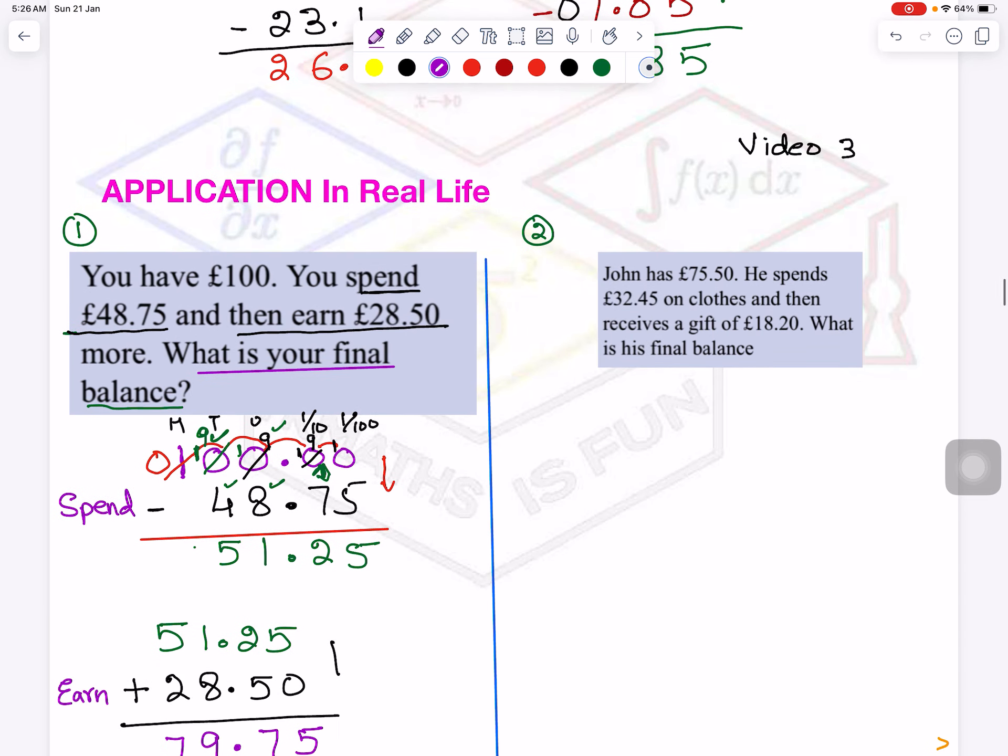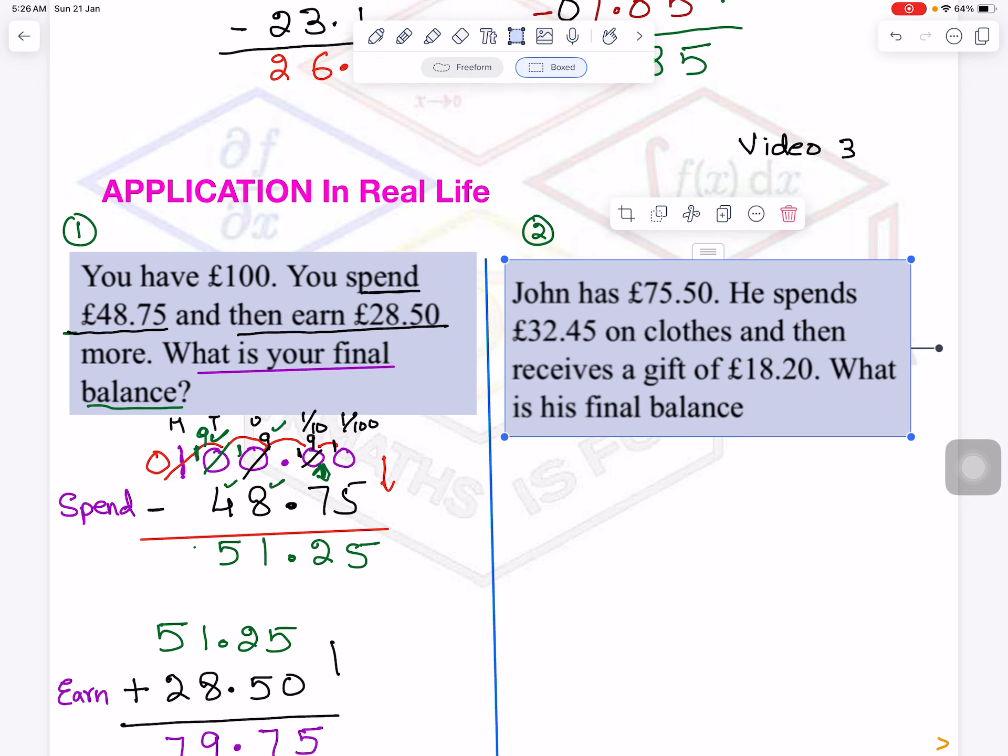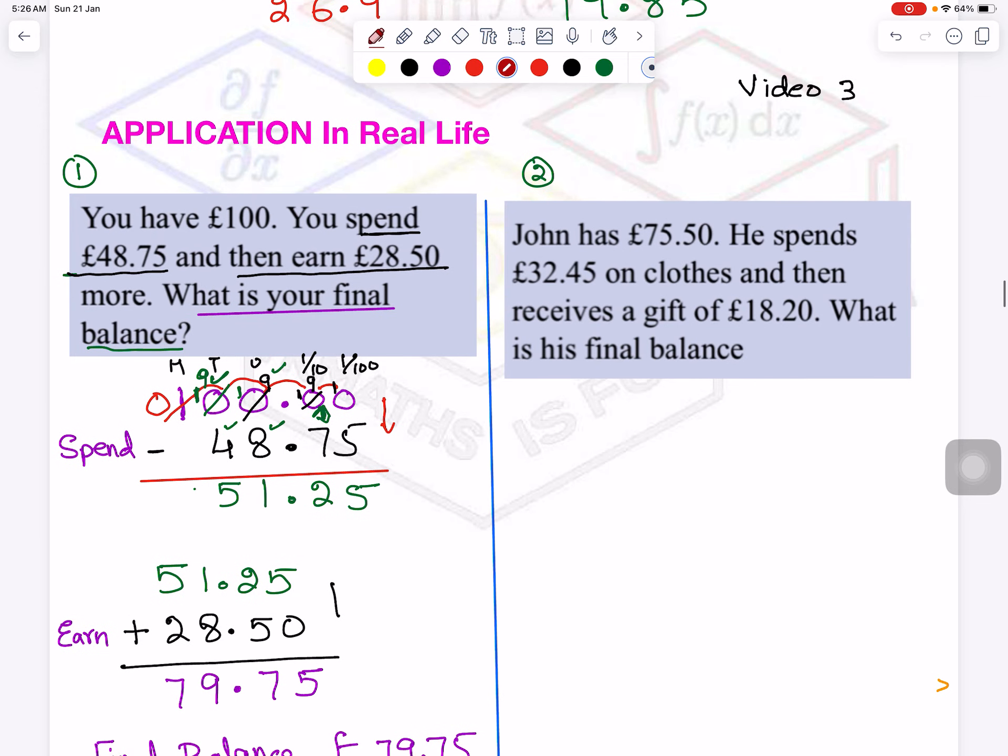Now let's do the next question. Let me increase the size of it. So now, you will try yourself this one first. So you can put the video on pause. But I am doing it here. So John has £75.50. Again he spent this much on his clothes, and then he received a gift of this. Now you see situation is, the concept will be same, that the scenario has changed. Spend is same, but somebody is giving you as a gift, or you earn it, it's the same thing.